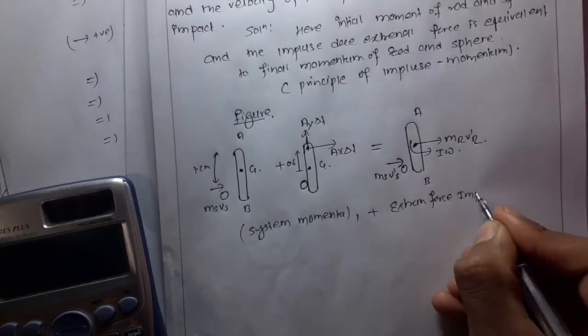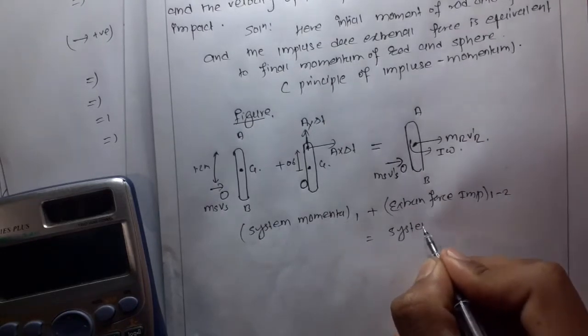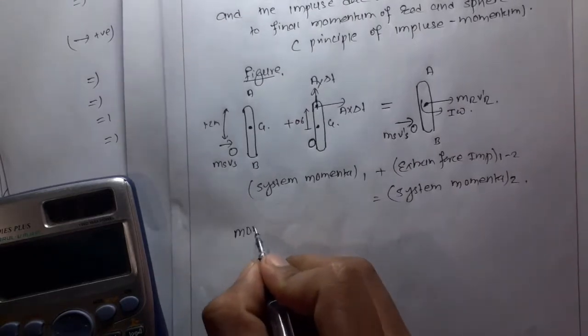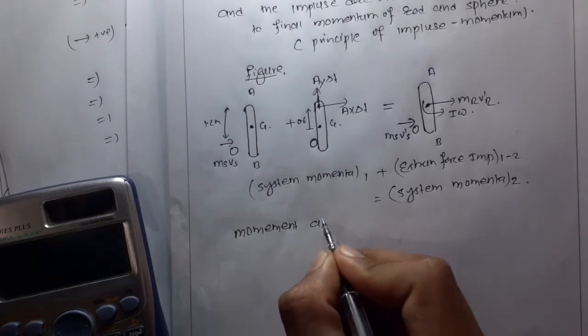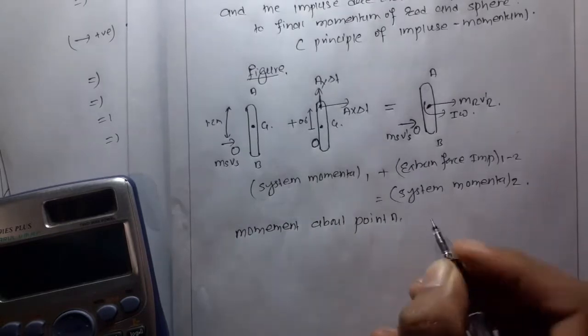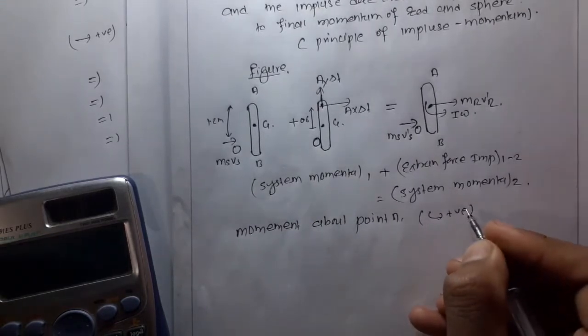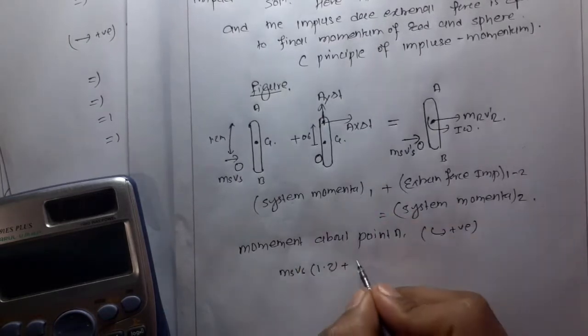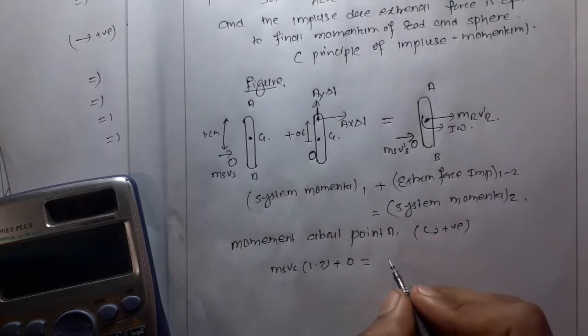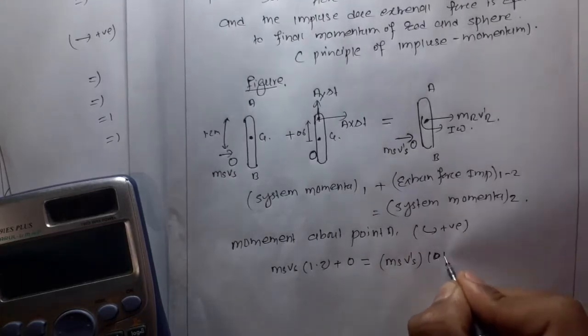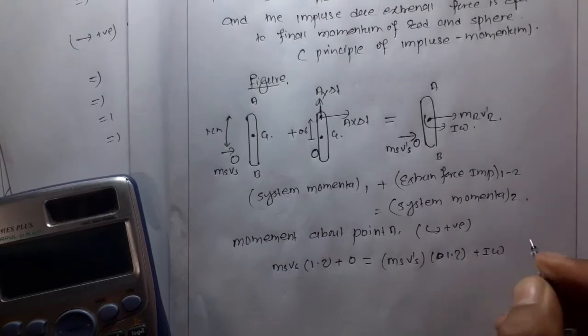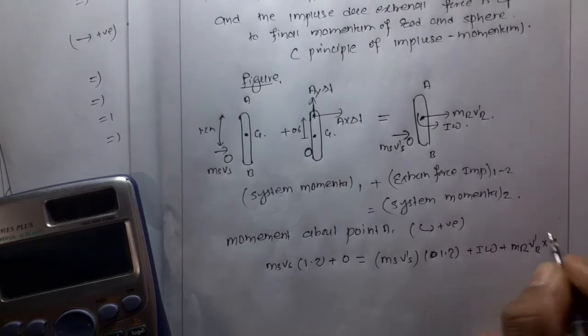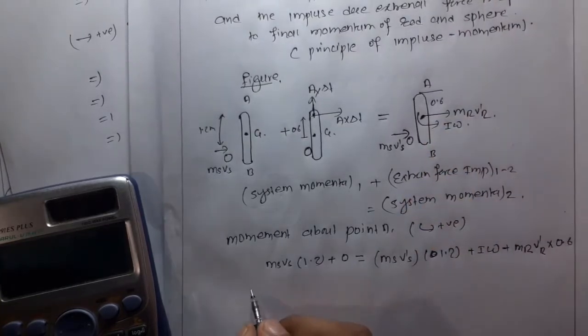Taking moments about point A, with clockwise as positive: mvs(1.2) plus impulse terms equals I·omega plus mv'_s(1.2), where the rod's center of gravity is at 0.6 meters.